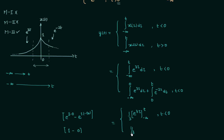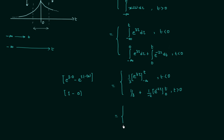So we have 1/3 plus the integration of e^(-2τ), which gives 1 over minus 2 times e^(-2τ), with lower limit 0 and upper limit t when t is greater than 0. The final answers are: for t less than 0, Y(t) = (1/3)e^(3t); and for t greater than 0, Y(t) = 1/3 + (1 − e^(-2t))/2.